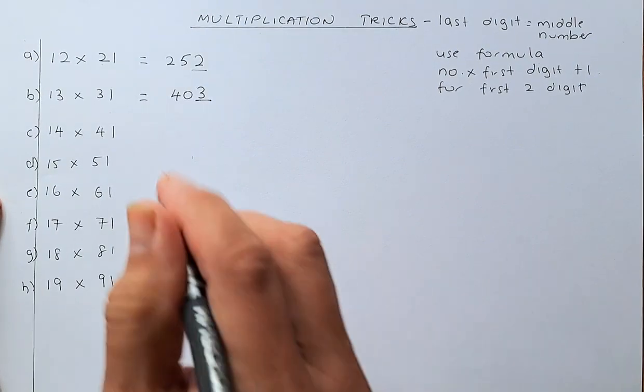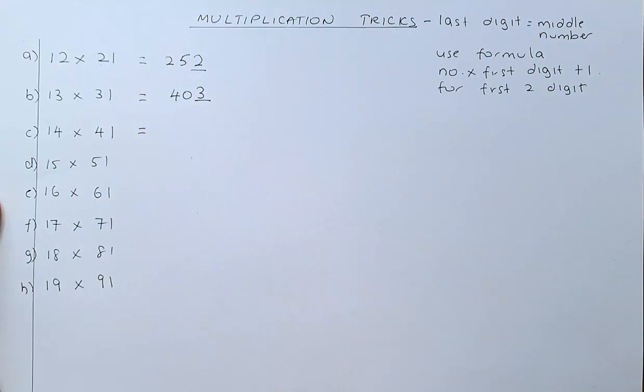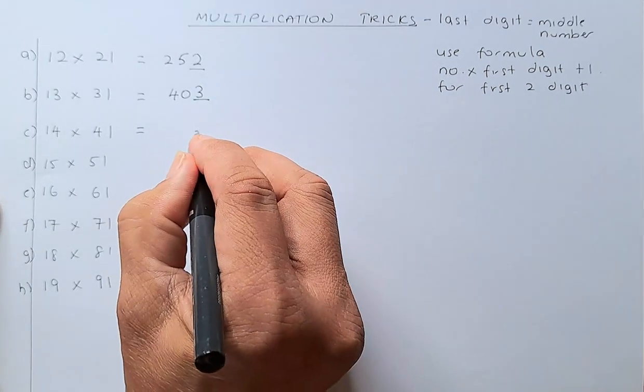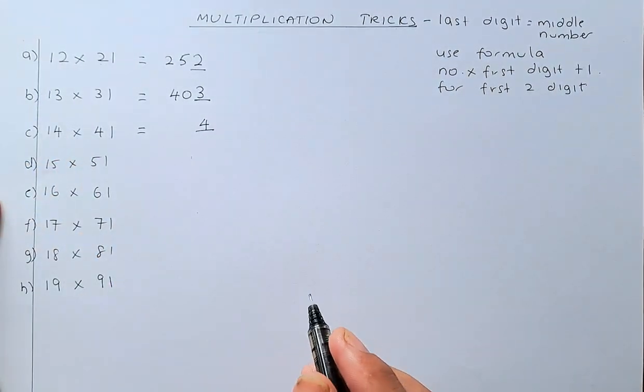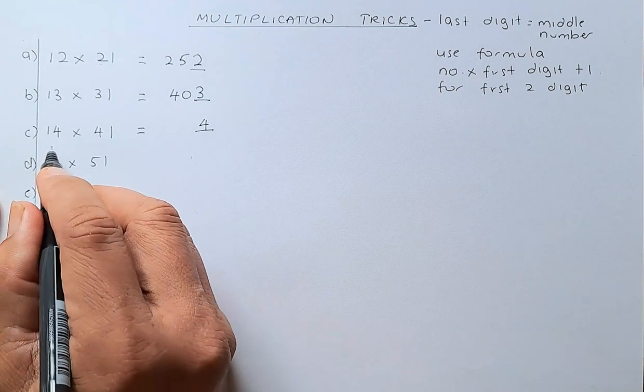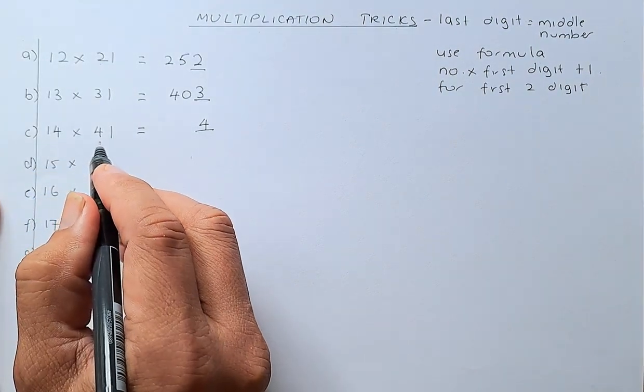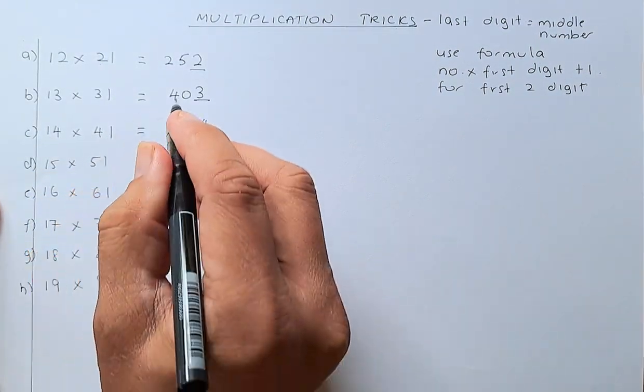So, that is how you can do it very fast. And then, we carry on. 14 times 41, the last digit is 4 because the middle number is 4. And then, you have to multiply 14 by 4 which is 56. 56 plus 1 is 57.